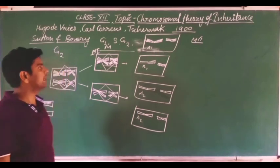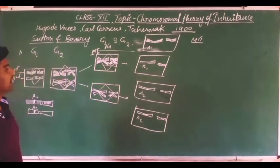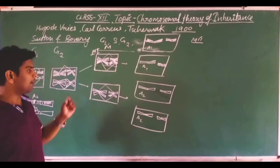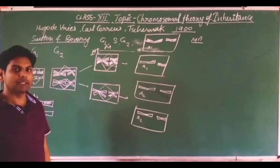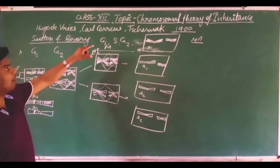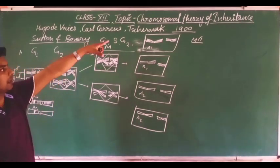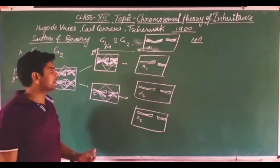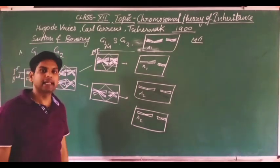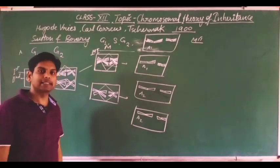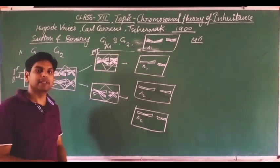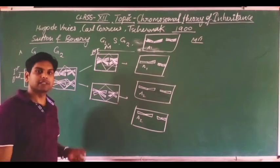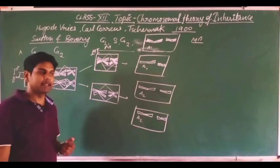This is how Sutton and Boveri proved the chromosomal theory of inheritance. In the next video, we will also prove how the Law of Independent Assortment works with the help of the chromosomal theory. I hope you understood the concept. If you have any doubts, you can ask me on my personal WhatsApp number. Thank you for watching.